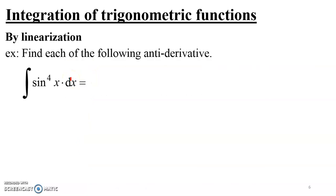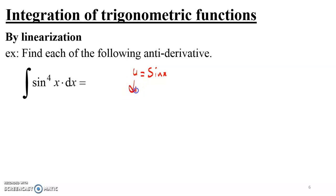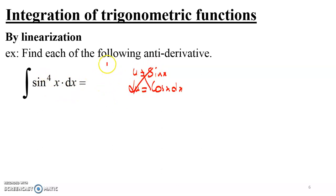Looking at the first example, we have to integrate a power of sine. If we try the substitution method, we set u equal to sine x, so du would be cosine x dx. But there is no cosine x multiplying dx in the integrand alongside sine to the fourth, so the substitution method does not work and we need an alternative.